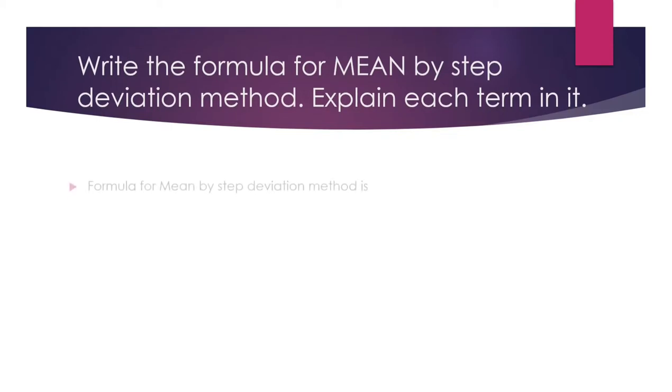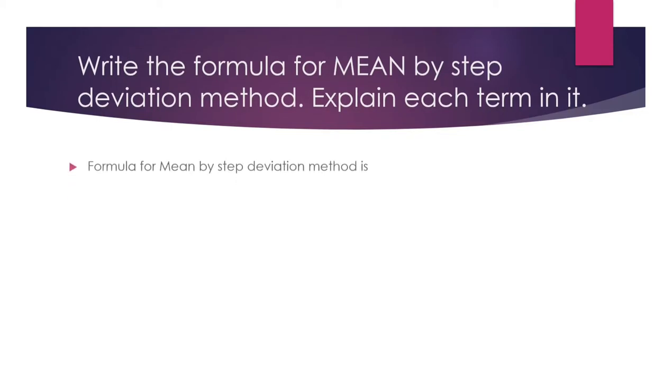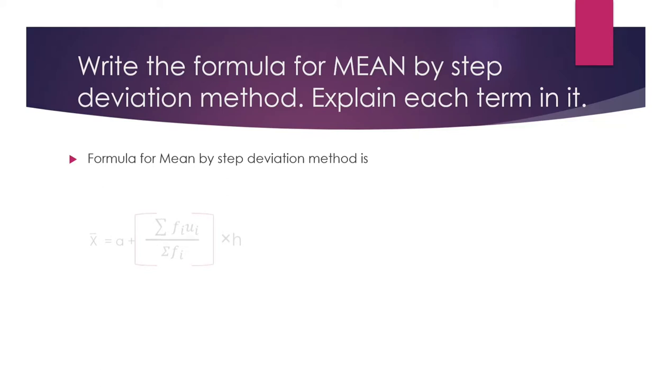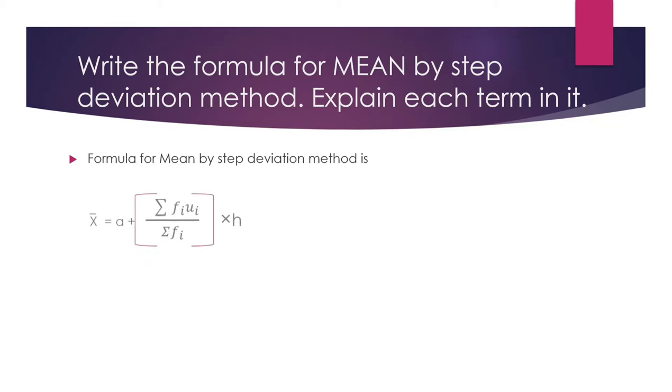The formula for mean by step deviation method is: x̄ = a + (Σfᵢuᵢ / Σfᵢ) × h.